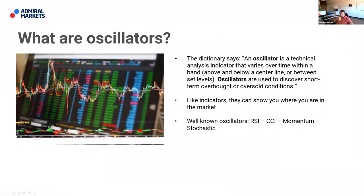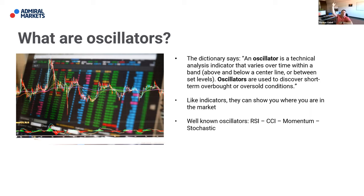What are oscillators? The dictionary says an oscillator is a technical analysis indicator that varies over time within a band above or below a center line, or between set levels. Oscillators are used to discover short-term overbought or oversold conditions. It's similar to the dictionary meaning of indicators — it shows overbought, oversold, support, or resistance.